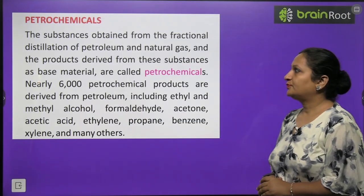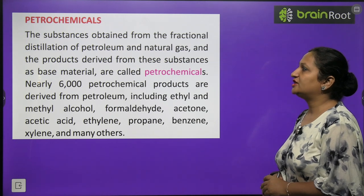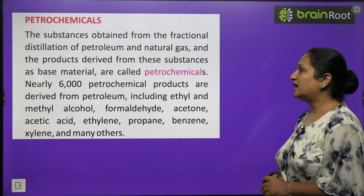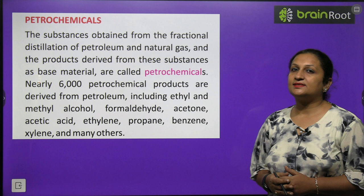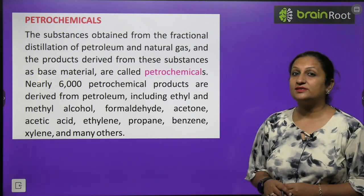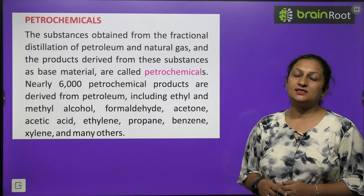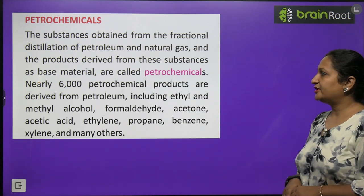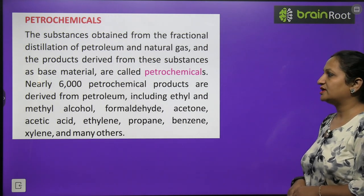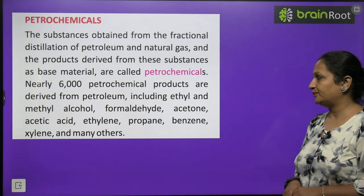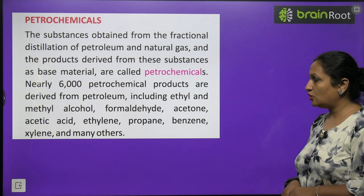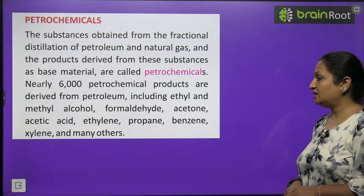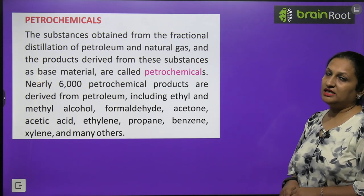Petrochemicals: the substances obtained from the fractional distillation of petroleum and natural gas, and products derived from these as base materials, are called petrochemicals. Nearly 6,000 petrochemical products are derived from petroleum, including ethyl and methyl alcohol, formaldehyde, acetone, acetic acid, ethylene, propane, benzene, xylene, and many others.